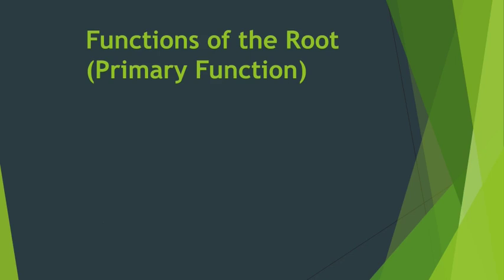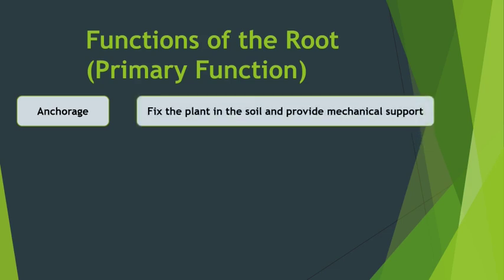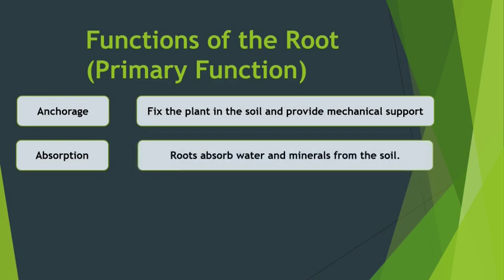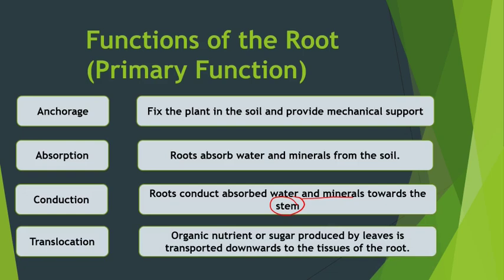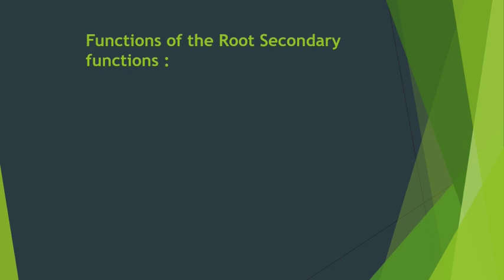What are the functions of the root? The main functions are: anchorage — it fixes the plant in the soil and provides mechanical support. Second is absorption of water and minerals from the soil and providing it to the plant. Third is conduction — whatever water and mineral is absorbed is conducted towards the stem. Fourth is translocation — whatever organic nutrient or sugar is produced by leaves is transported to the tissues of the root. So anchorage, absorption, conduction, and translocation are important primary functions of the root.